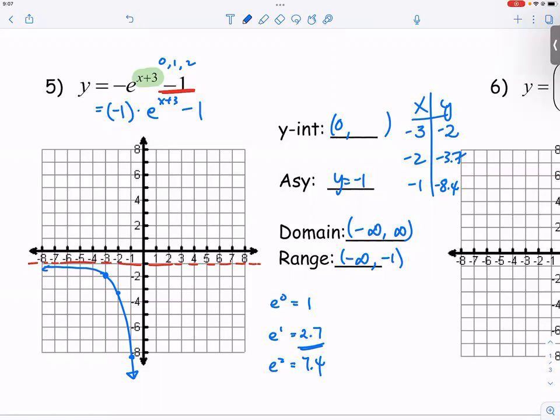So what you could do is this. You can say that it's negative 1 times e to the 0 plus 3 power minus 1, which is negative e to the 3rd power minus 1. And you can just leave that number as your y-coordinate of the y-intercept.